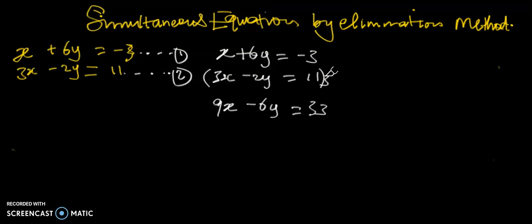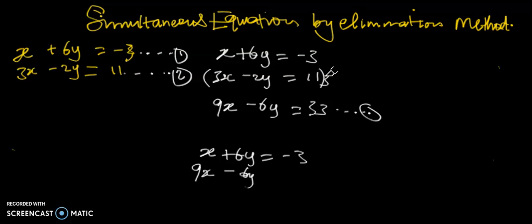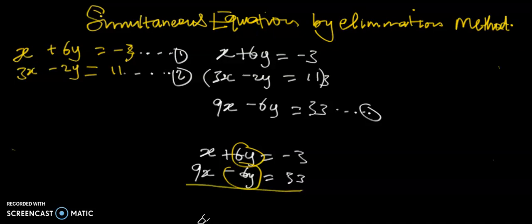Notice what happened. We now have x plus 6y equals negative 3 from equation one, and 9x minus 6y equals 33 from the multiplied equation. We have plus 6y and minus 6y, which cancel to zero — we've eliminated the y values. Adding the two equations gives x plus 9x which is 10x, equal to negative 3 plus 33, which gives 30.